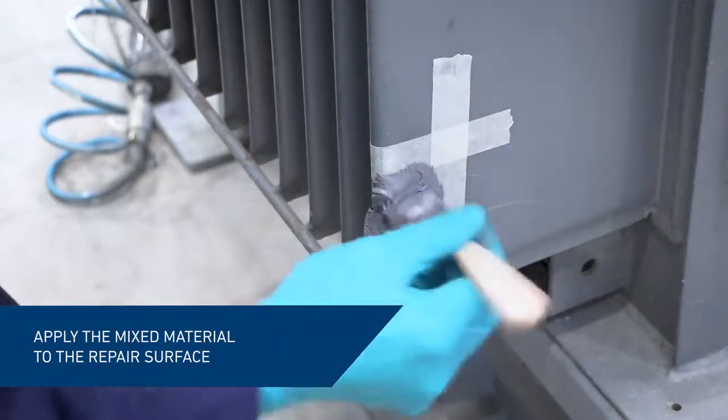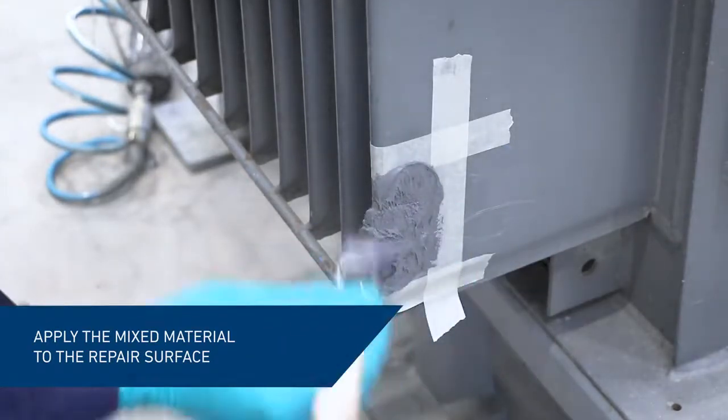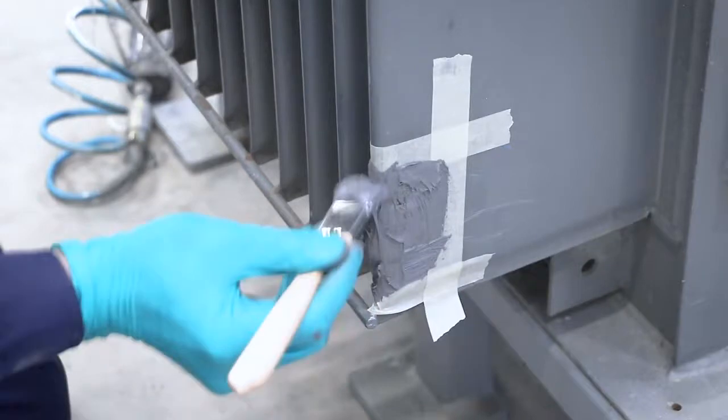Then, apply Belzona 1212 onto the substrate using a short bristled brush, working the material well into the surface.